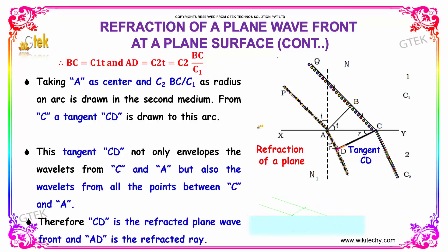Taking A as center and c2 BC divided by c1 as radius, draw an arc in the second medium. From C as tangent, CD is drawn to this arc. The tangent CD not only envelopes the wavelets from C and A but also the wavelets from all the points between C and A.